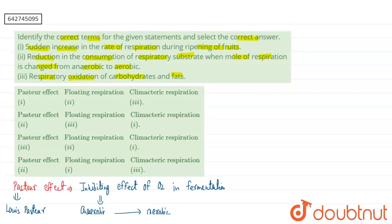Now matching the statements to the terms: the first statement — sudden increase in the rate of respiration during the ripening of fruit — corresponds to climacteric respiration. The second statement — reduction in the consumption of respiratory substrate when the mode of respiration is changed from anaerobic to aerobic — corresponds to the Pasteur Effect. The third statement — respiratory oxidation of carbohydrates and fats — corresponds to floating respiration. So climacteric respiration is first, the Pasteur Effect is second, and floating respiration is third. The correct option is the second one. I hope this answered your question, thank you.